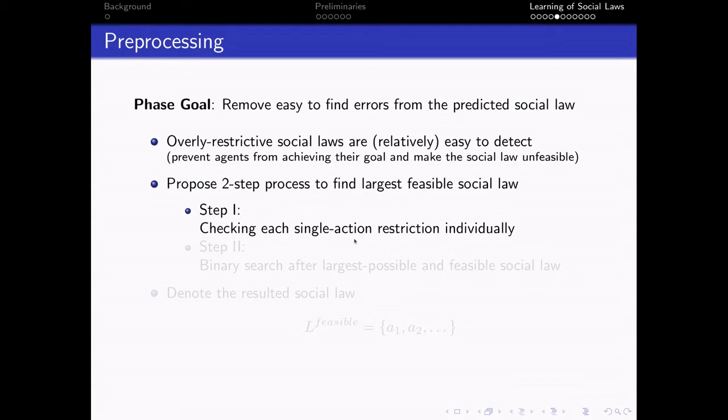So we propose a two-step process to find the largest feasible social law. First, we check every individual single action restriction. And then we do some kind of binary search for the largest possible and feasible social law. Details in the paper. And we denote the result of social law as L-feasible, a subset of actions that needs to be restricted.